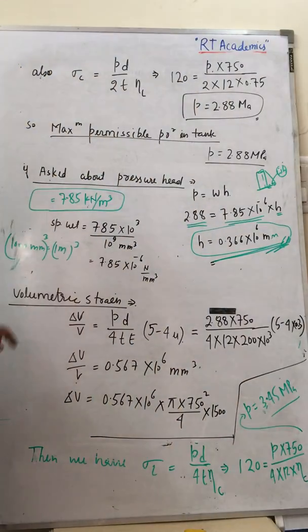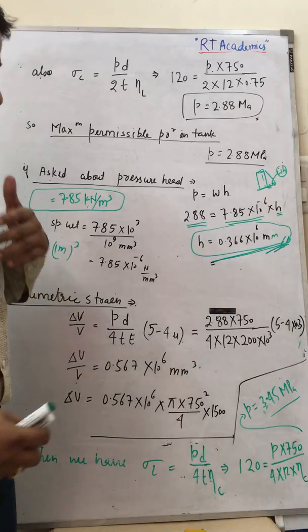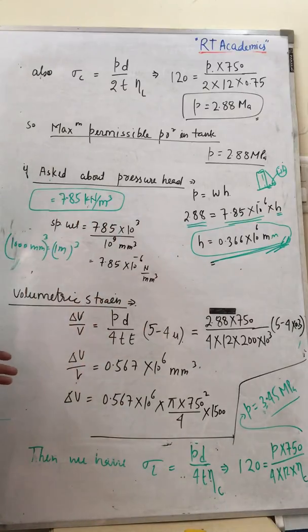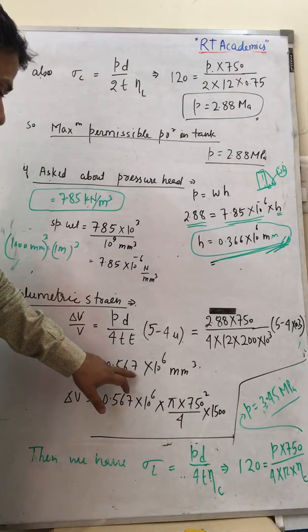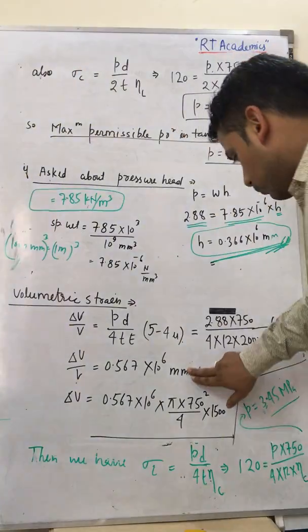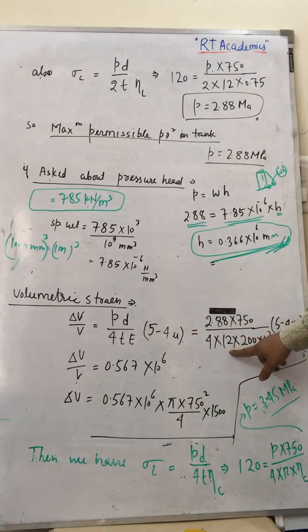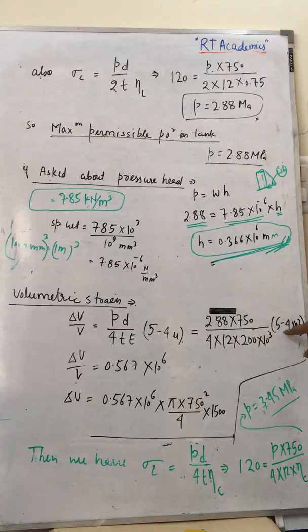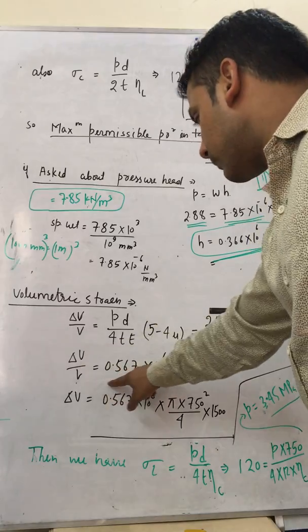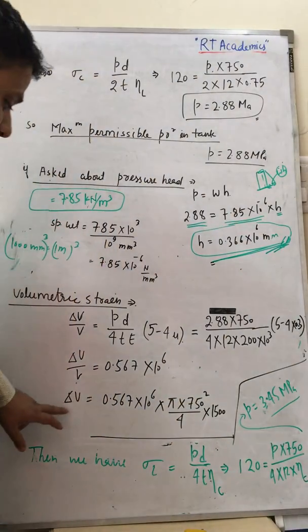Now we come to volumetric strain. The volumetric strain ΔV/V has no units and equals pd over 4tE multiplied by (5 − 4μ). Here E equals 200 × 10³ MPa (modulus of elasticity) and μ equals 0.3 (Poisson's ratio). Substituting these values gives the volumetric strain.